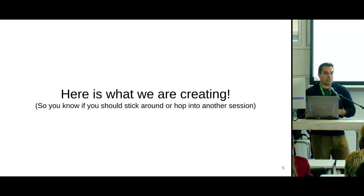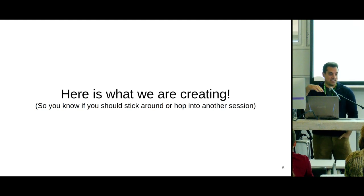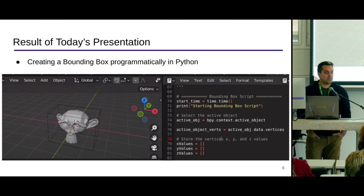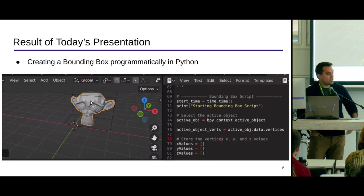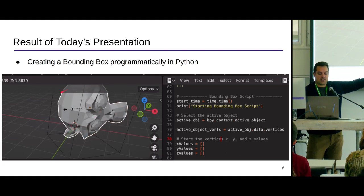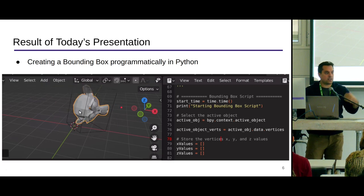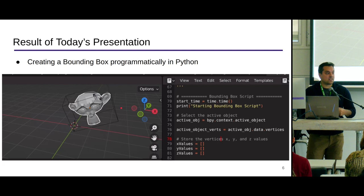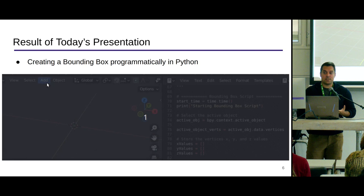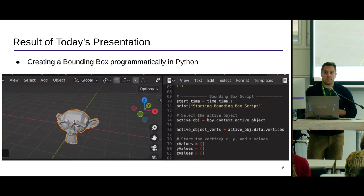Just to give you a sense of what we're going to be creating: we're going to build a little Python script and implement it as a command for creating a bounding box. So you'll see Suzanne — our mesh — and then the bounding box that surrounds it. Now, of course there are bounding boxes and ways to do this in Blender already, but we're going to see how to do this programmatically and explore some of the Python API and its modules.